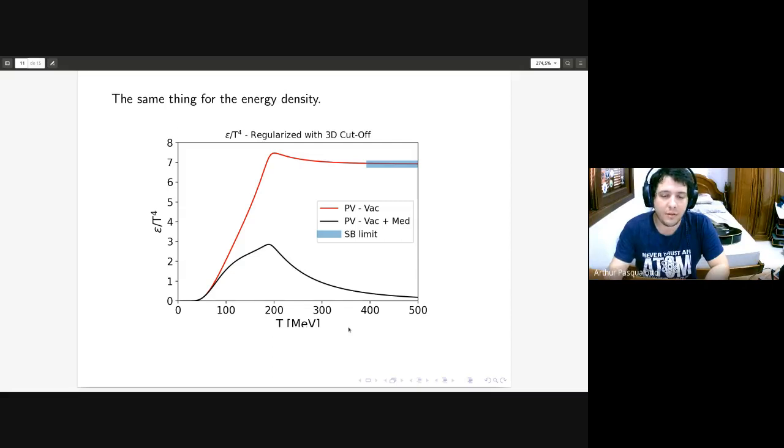The same thing happens to the energy density. We see that the value converges only if you apply the regularization only to the vacuum. Otherwise it will go to zero, which is something really weird because you're supposed to have weaker interaction as you increase the temperature, and with very high temperature you're supposed to have something that resembles a free gas.